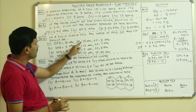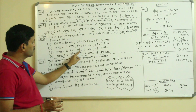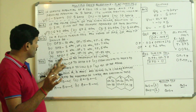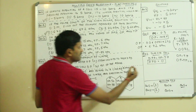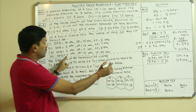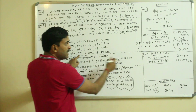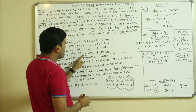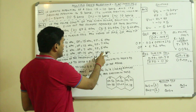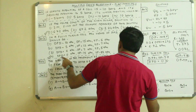Looking at the options: option 4 has DPD = 0, OP = 15 atm, TP = 15 atm. Since OP equals TP (both 15), this confirms DPD = 0. This matches the condition for a fully turgid cell, so the answer to question 3 is option 4.